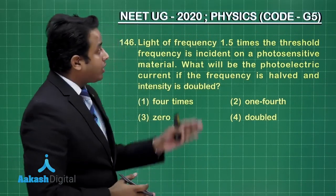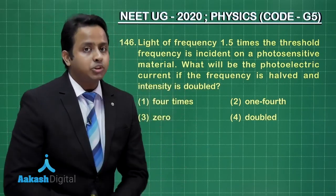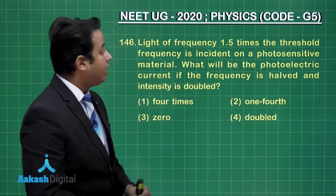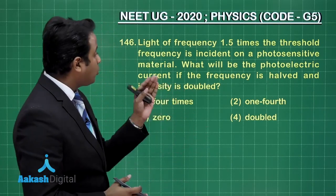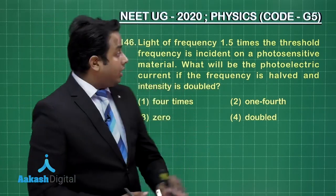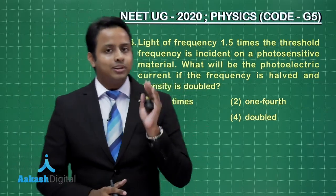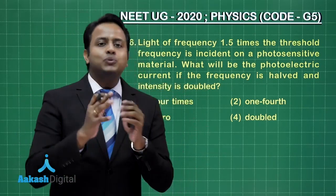light of frequency 1.5 times the threshold frequency is incident on a photosensitive material. What will be the photoelectric current if the frequency is halved and intensity is doubled? Now, that is a confusing question for you.